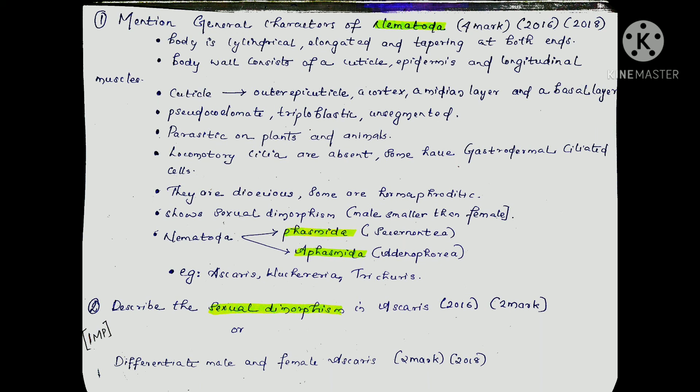They are parasitic on plants and animals. Locomotory cilia are absent. Some have gastrodermal ciliated cells. They are dioecious, and some are hermaphrodite. They show sexual dimorphism — the male is smaller than the female. Nematodes are classified into two categories: Phasmida and Aphasmida (or Secernentia and Adenophorea). Examples include Ascaris, Wuchereria, and Trichuris.